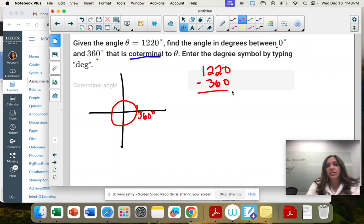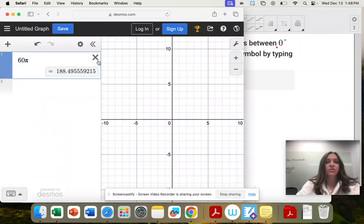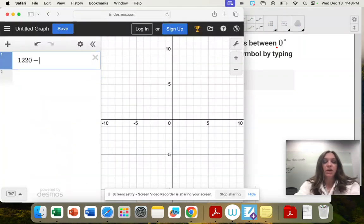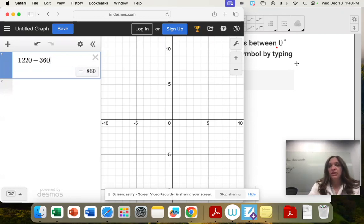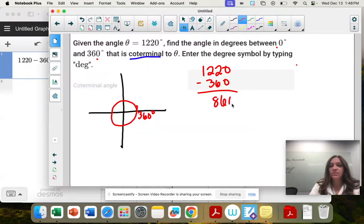If I subtract 360, I have 1,220 minus 360. I'm down to 860. And then I'm going to do that again, subtract 360. This one I can do without the calculator. It's 500. And I'm going to do it again.